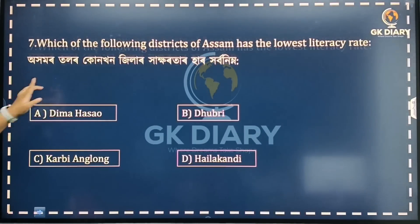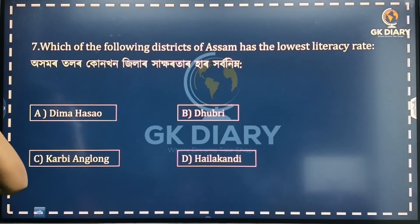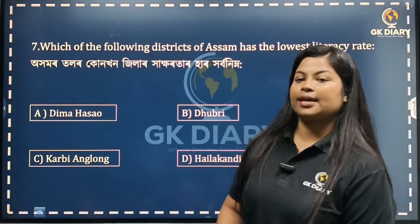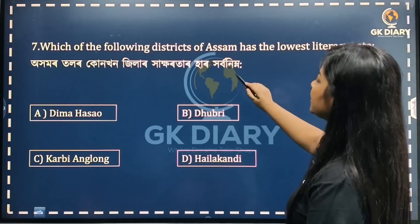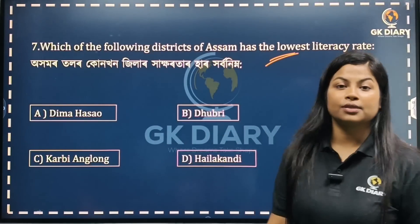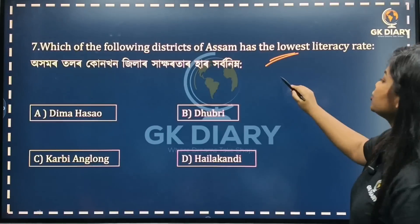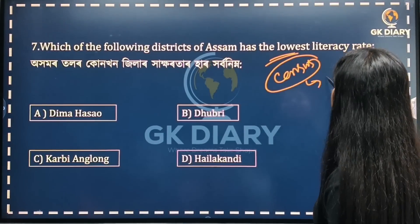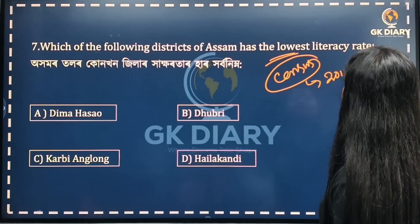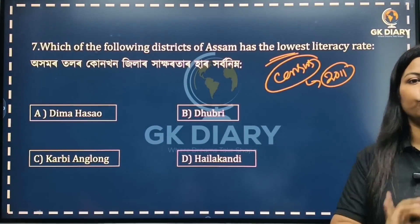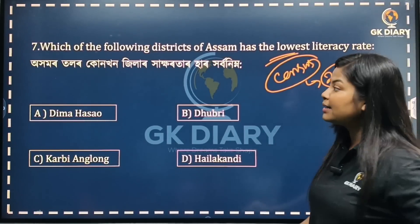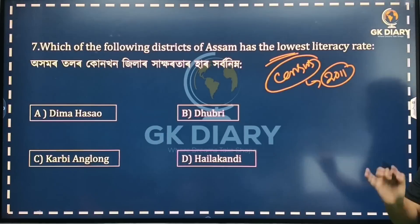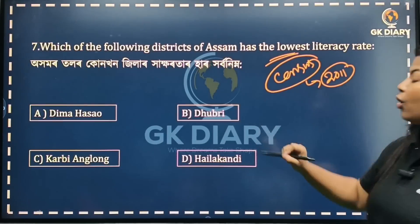Next question: Which district of Assam has the lowest literacy rate? What is the highest literacy rate? Based on the 2011 census — because the next census was affected by COVID-19 — the highest literacy rate is higher and the lowest literacy rate comes from a specific district.